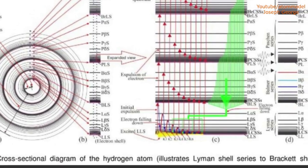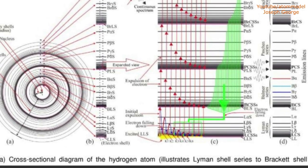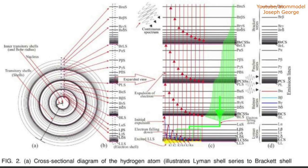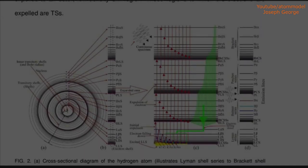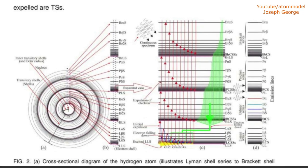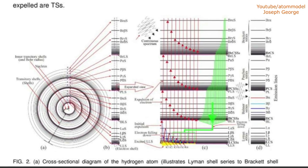Now if another photon with a frequency which matches with the resonant frequency of the above stated transitory shell simultaneously incident on the electron, the electron will emit a third photon with the frequency of that incident photon and will be again ejected to a more outer transitory shell.